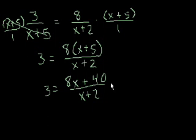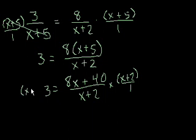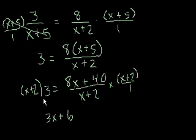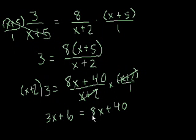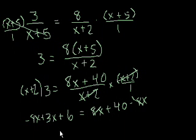Now we want to get rid of x plus 2, so we multiply both sides by x plus 2. The left-hand side becomes 3 times x plus 2, which distributes to 3x plus 6. Remember to always distribute because you're multiplying by the whole expression x plus 2. On the right-hand side, the x plus 2's cancel out, leaving 8x plus 40. This is now a level 3 problem. Subtracting 8x from both sides, on the left we have minus 5x plus 6, and on the right we have 40.